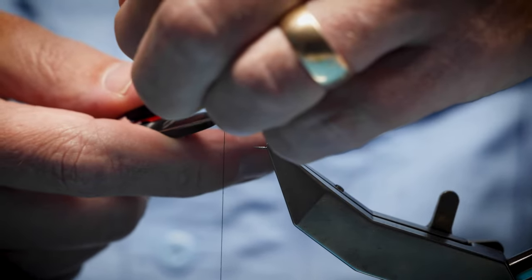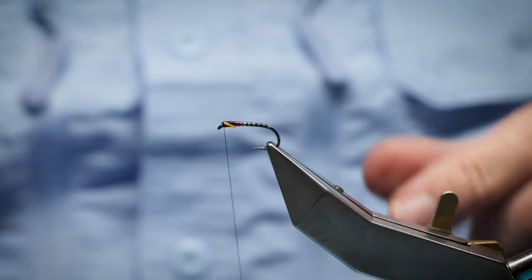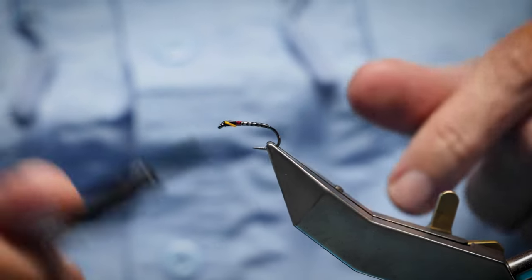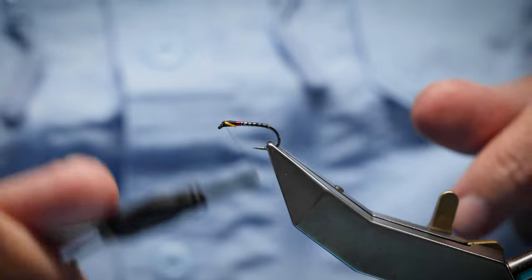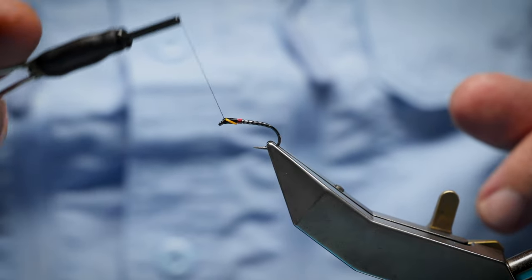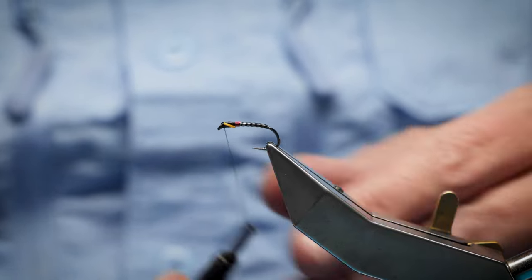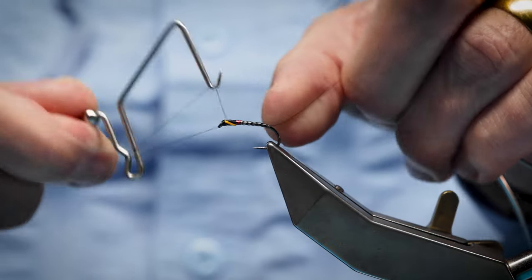To get a neater cut, you may have a bit of sunburst color at the bottom, but we can then just tidy this up with a few turns and whip finish.